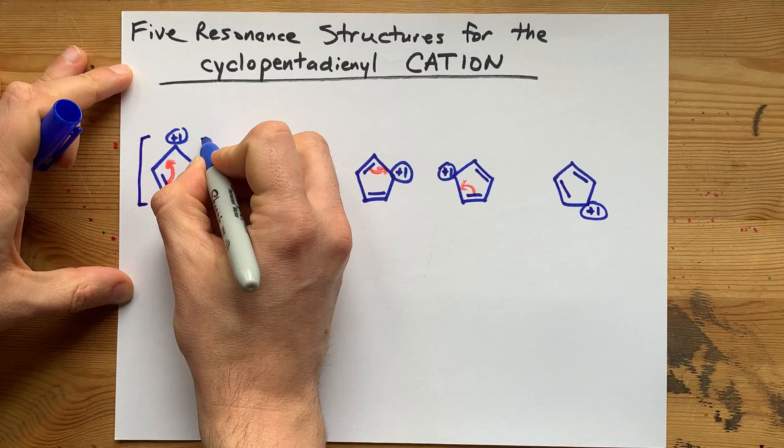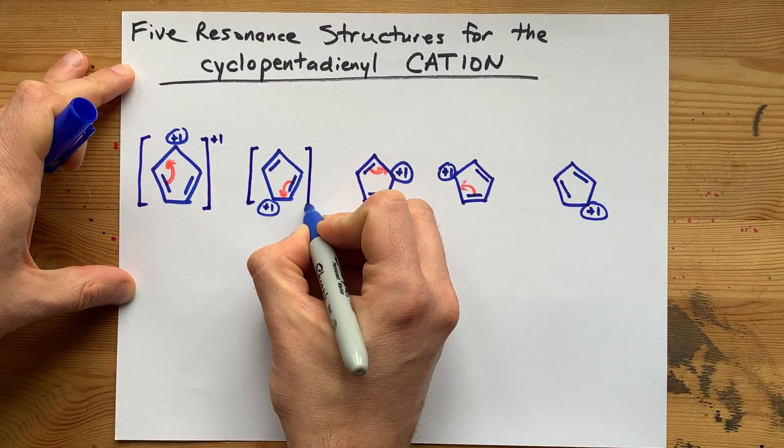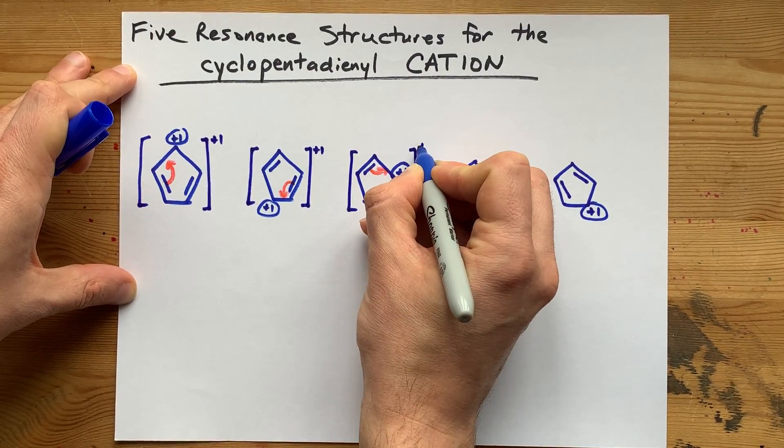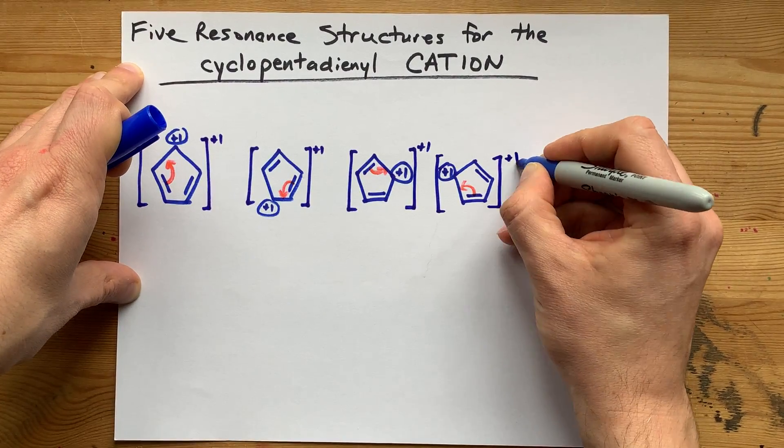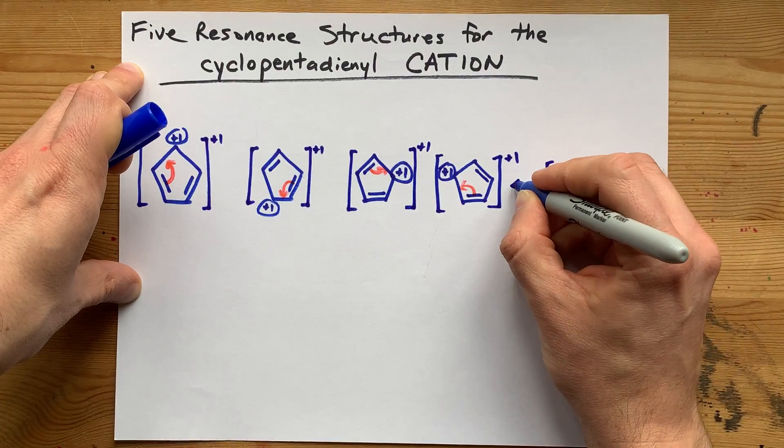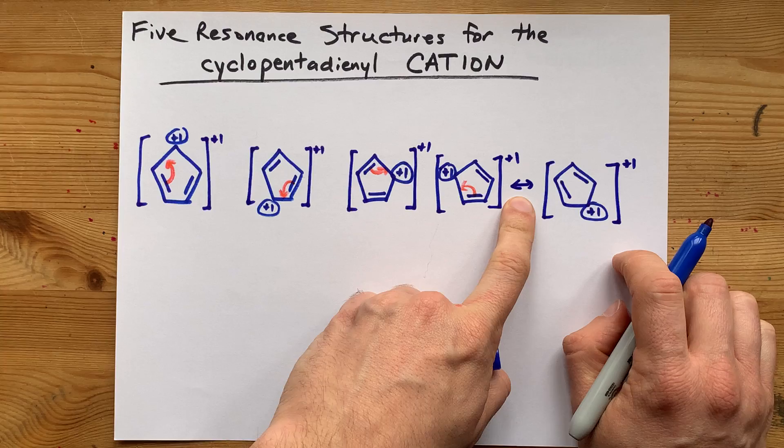Now, some teachers will want you to put each of these in its own set of square brackets to show that it is an ion. I can't tell you whether or not your teacher wants it. Go find out. It's not wrong to do it. It's just how we show charges in Lewis structures.